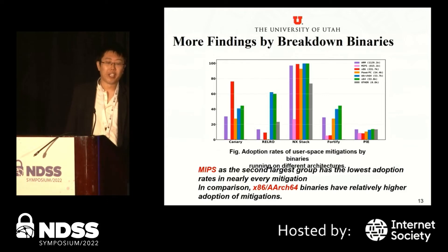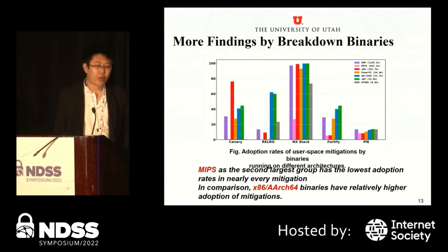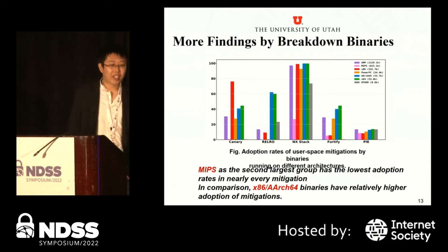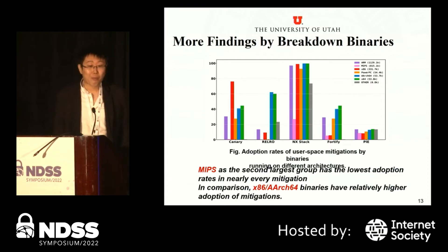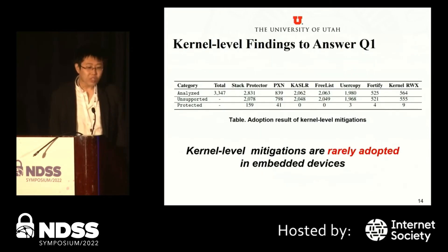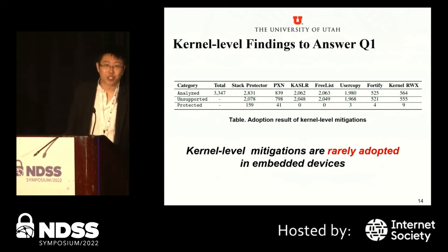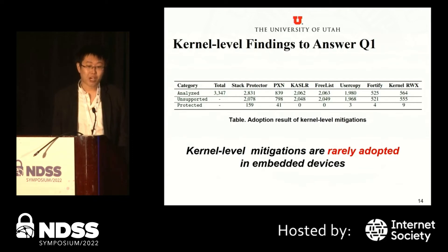We have more interesting findings by breaking down binaries by type. Breaking down by architecture, ARM binaries as the largest group have a moderate level of all kinds of attack mitigations. However, MIPS as the second largest group has the lowest attack mitigations in nearly every category. In comparison, x86 and ARM64 binaries have relatively higher adoption rates because they are already running on newer build environments. The adoption of kernel-level mitigation is also disappointing. Of over 3,000 analyzed Linux kernels, only 159 are protected with Stack Protector. The other protections are almost entirely missing, indicating that kernel-level mitigations are rarely adopted.